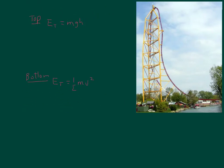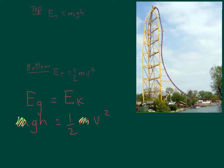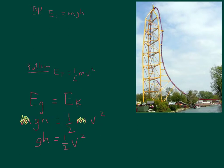Total energy needs to be conserved — whatever energy we start with, we have to end with. So the energy at the top has to equal the energy at the bottom, meaning EG at the top equals EK at the bottom, or mgh equals one-half mv squared. Here's where we can start cancelling out the masses. You've got the same mass on either side, they cancel out, and that's why it doesn't matter what the mass of the cart is or the number of people in it. It will not matter for this calculation. So now we're left with gh equals one-half v squared.